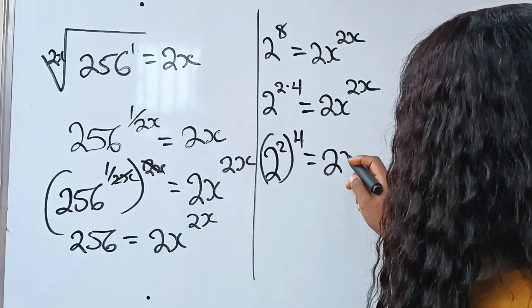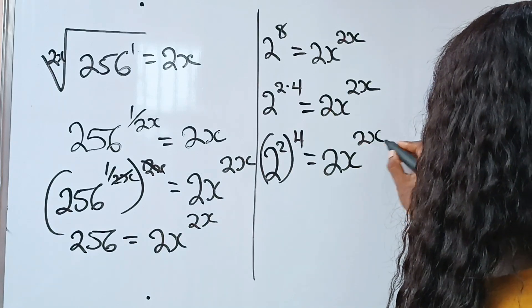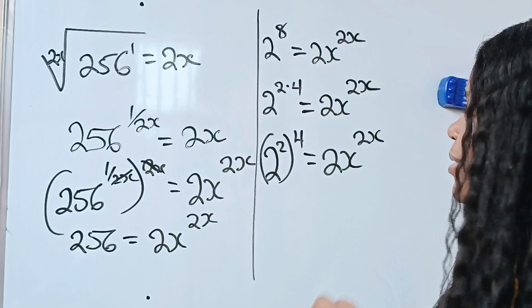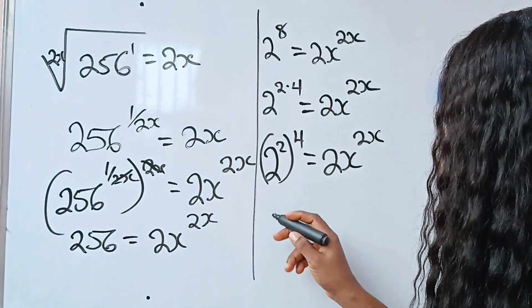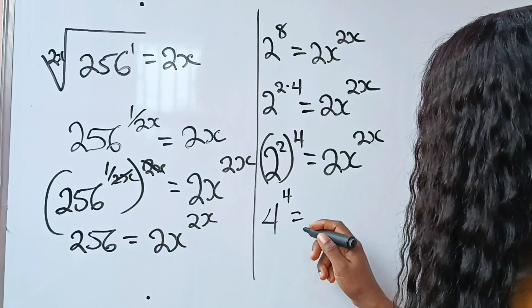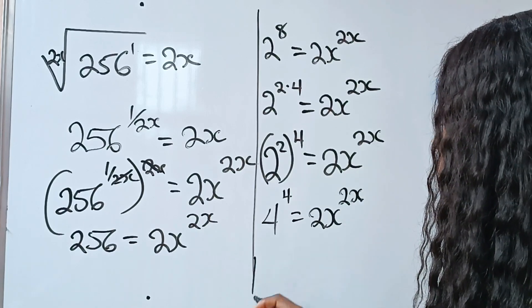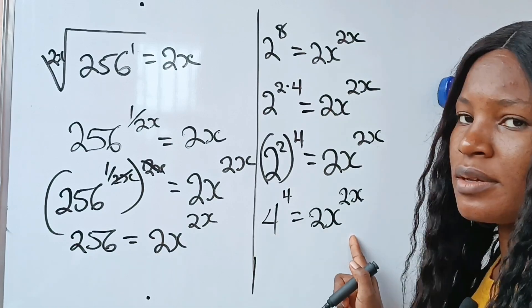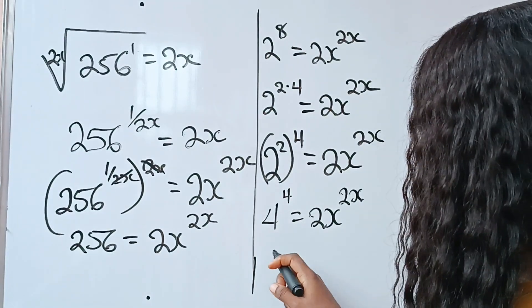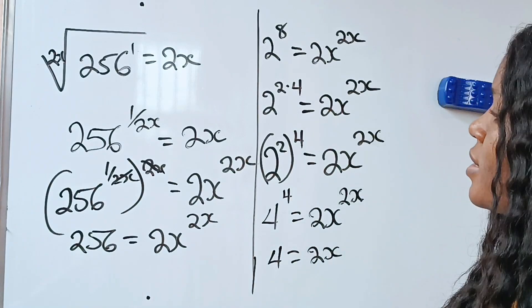This is equal to 2x raised to the power of 2x. Recall what I said, that you should stay to the end and see how we substitute the solution we got. Now, 2 to the power of 2 is 4. So what we have now is 4 to the power of 4 is equal to 2x to the power of 2x. Now, we can equate by comparison. You can see that 4 is equal to 2x, so we can write that 4 is equal to 2x.